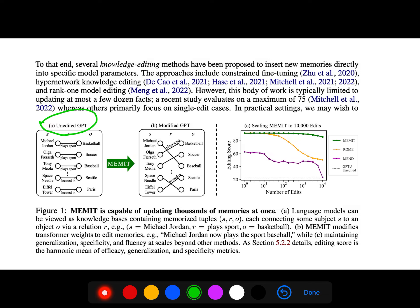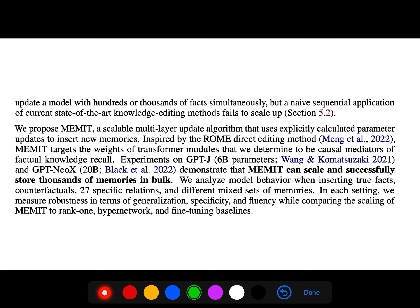MEMIT modifies transformer weights to edit memories. Michael Jordan now plays the sport baseball. In C, you see maintaining generalization and fluency that scales beyond our method. They propose MEMIT, a scalable multi-layer updating algorithm that uses explicitly calculated parameter updates to insert new memories.